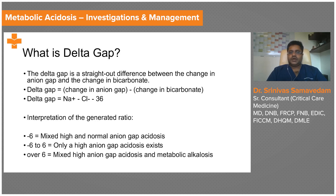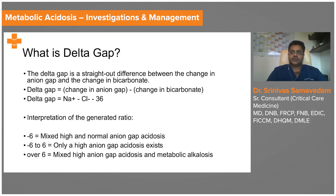The delta gap can also be calculated by the formula: sodium plus chloride minus 36. This is a rough formula. More precisely, the delta gap is a ratio of the change in the anion gap minus the change in the bicarbonate.